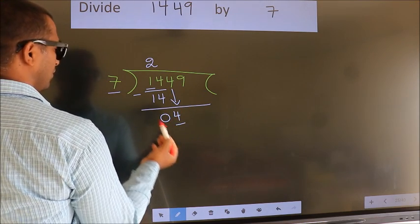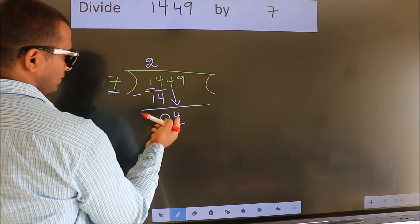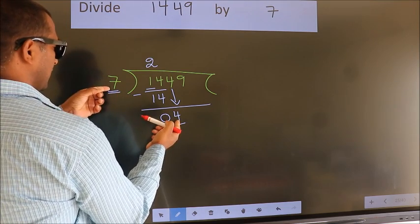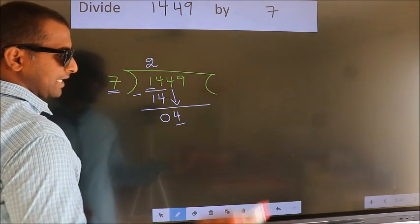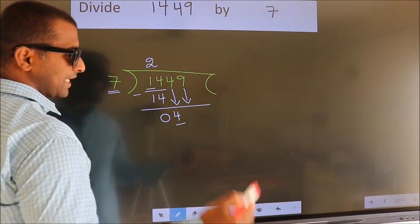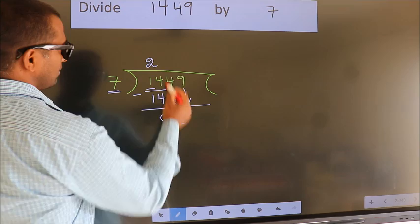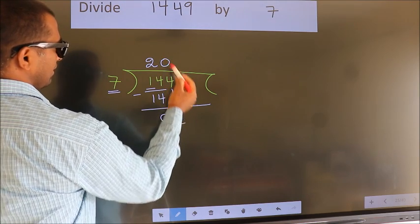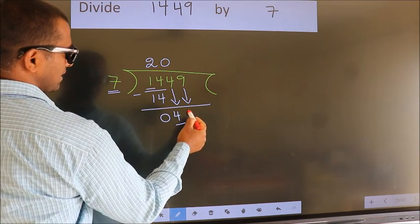Here we have 4, here 7. 4 is smaller than 7. So we should bring down the second number. And the rule to bring down the second number is to put 0 here. Then only we can bring down this number.